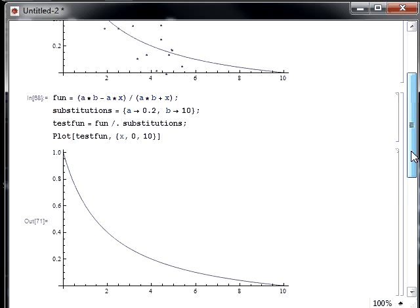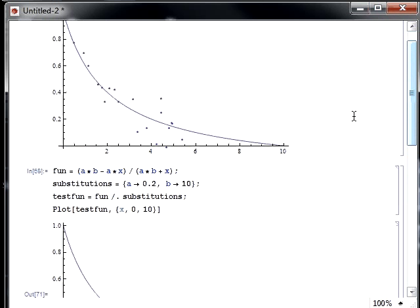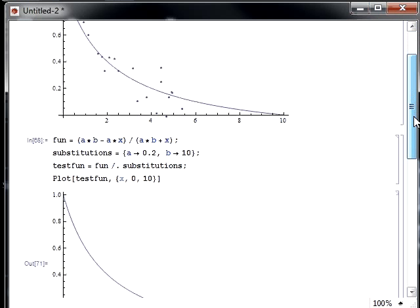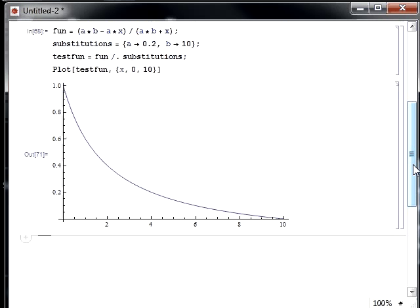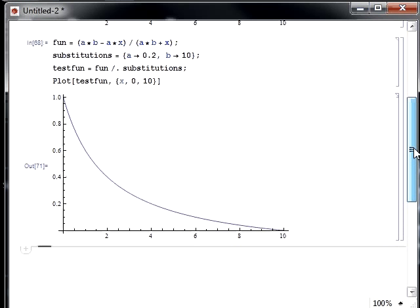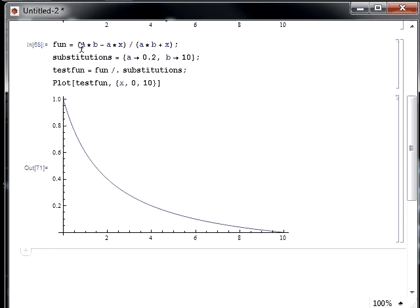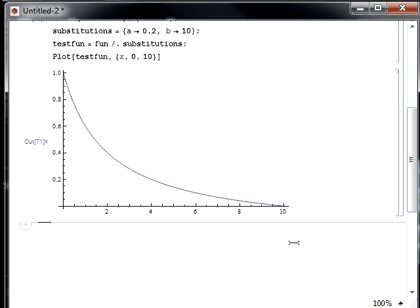So what we're going to first do, just for demo purposes, is make some simulated random data that's supposed to obey that function. And then we're going to fit this equation to that function as if we didn't know what a and b were. And so we'd basically be solving for a and b.